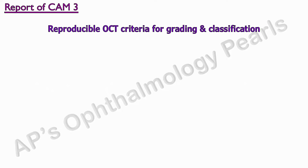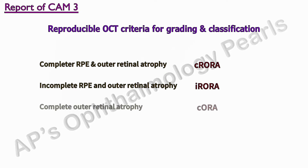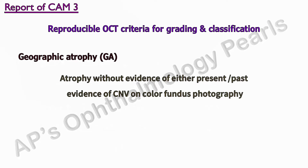The report recommended that atrophic stages should be named according to the affected anatomic layer as identified by OCT. CAM recommended four terms to describe the types of atrophy in AMD: complete RPE and outer retinal atrophy (C-RORA), incomplete RPE and outer retinal atrophy (I-RORA), complete outer retinal atrophy, and incomplete outer retinal atrophy. There is no reference to the term geographic atrophy, but because of its deep association with AMD in the literature, CAM decided to retain the term, restricting its use to define atrophy without evidence of present or past CNV on color fundus photography. Geographic atrophy thus falls under the umbrella of C-RORA.